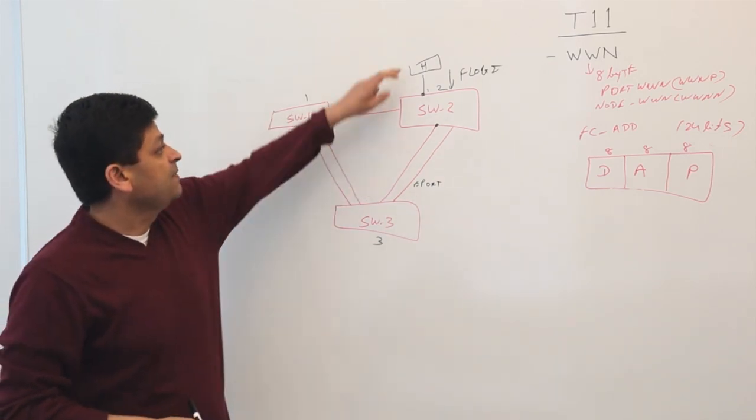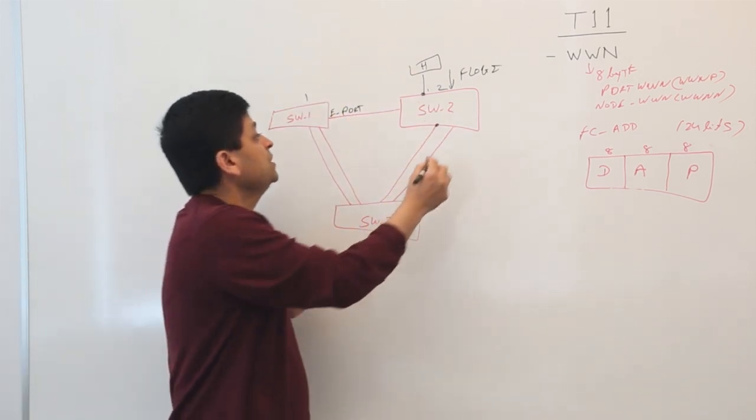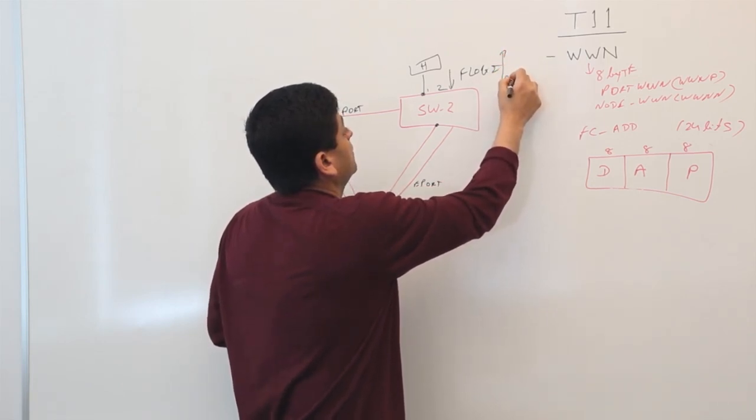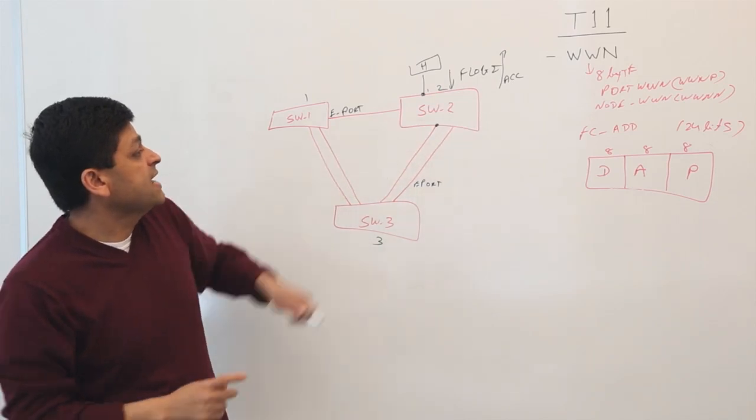It's a Fiber Channel frame that goes to this switch. This switch will respond with an accept. And inside the accept will say, hey, your address is going to be 211.